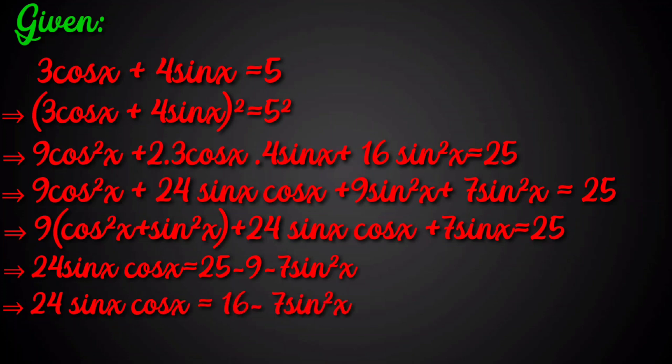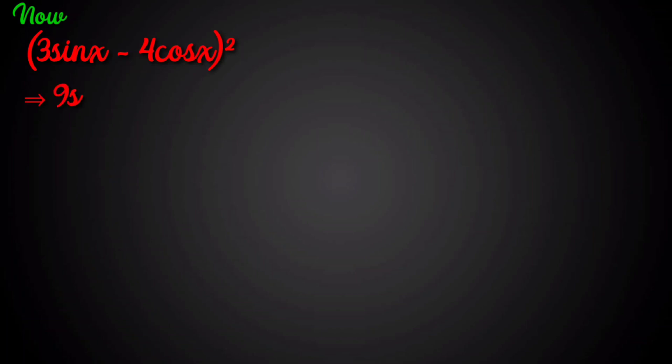We note the value 24sin(x)cos(x) as equation (1) for later use. Now we evaluate (3sin(x) - 4cos(x))², which expands to 9sin²(x) - 2·3sin(x)·4cos(x) + 16cos²(x).